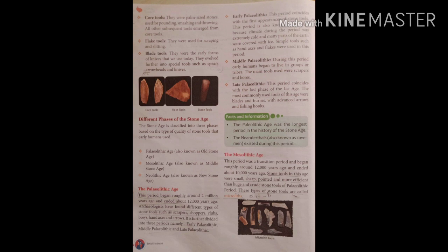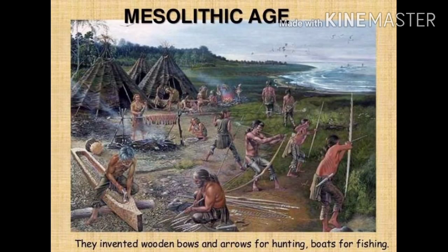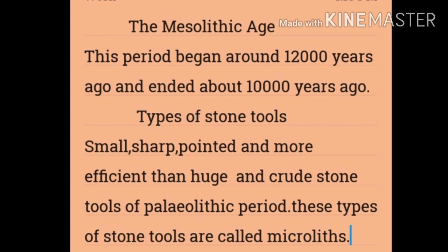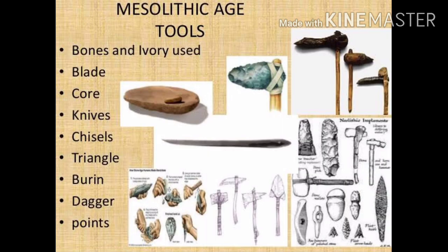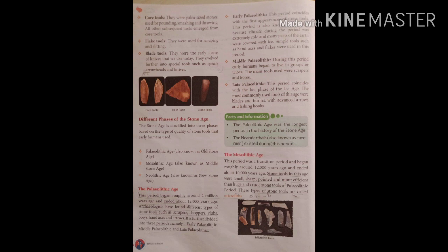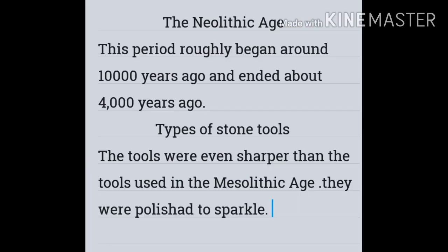The next phase of the Stone Age is the Mesolithic Age. This was a transition period — a period of change — that began roughly around twelve thousand years ago and ended about ten thousand years ago. Stone tools in this age were small, sharp, pointed, and more efficient, more developed than the huge and crude tools of the Paleolithic Age. These small, sharp, pointed tools were called microliths.